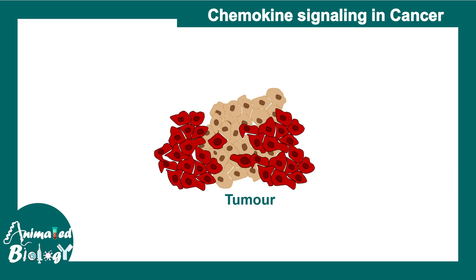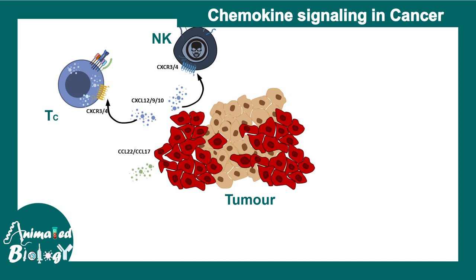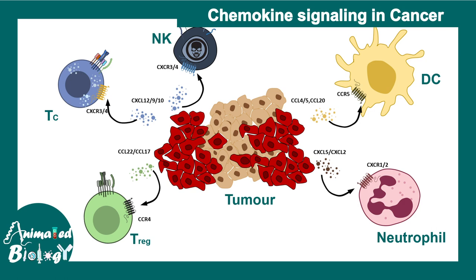In the context of tumor and cancer biology, chemokine signaling is extremely important. It turns out there are several chemokines secreted by tumor cells that attract many immune cells into the tumor region. For example, CXCL12, CXCL9, and CXCL10 attract cytotoxic T cells and natural killer cells, which have different types of chemokine receptors on their surface. Other chemokines such as CCL22 and CCL17 attract T regulatory cells, while CXCL5 and CXCL12 attract neutrophils, and CCL4 and CCL20 attract dendritic cells. A complex chemokine signaling network in the tumor microenvironment helps modulate the immune responses around tumors.